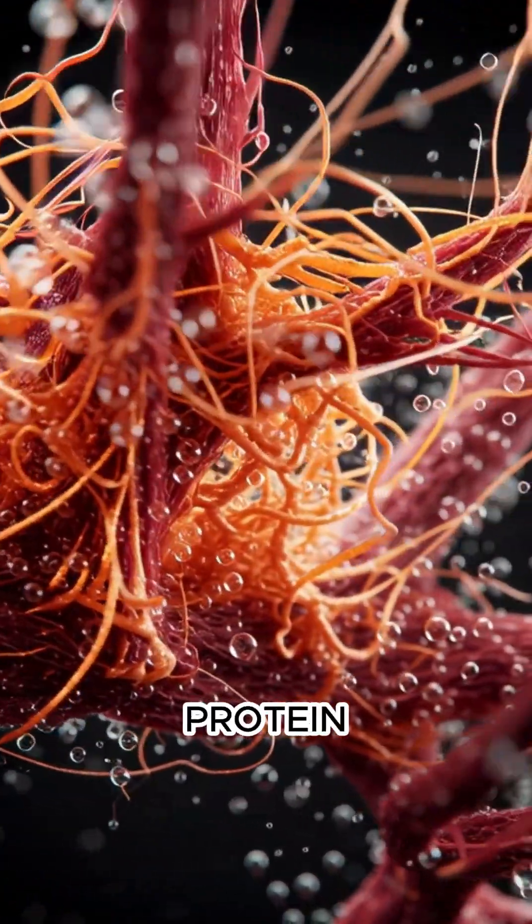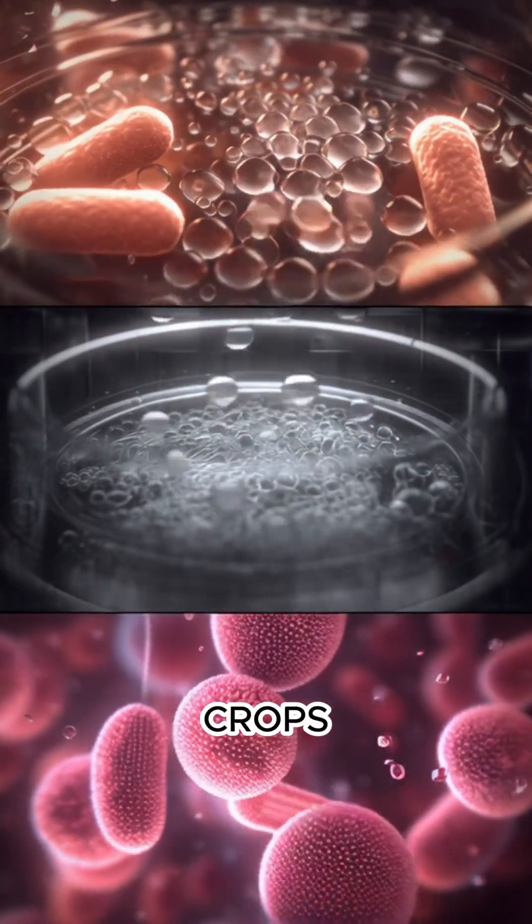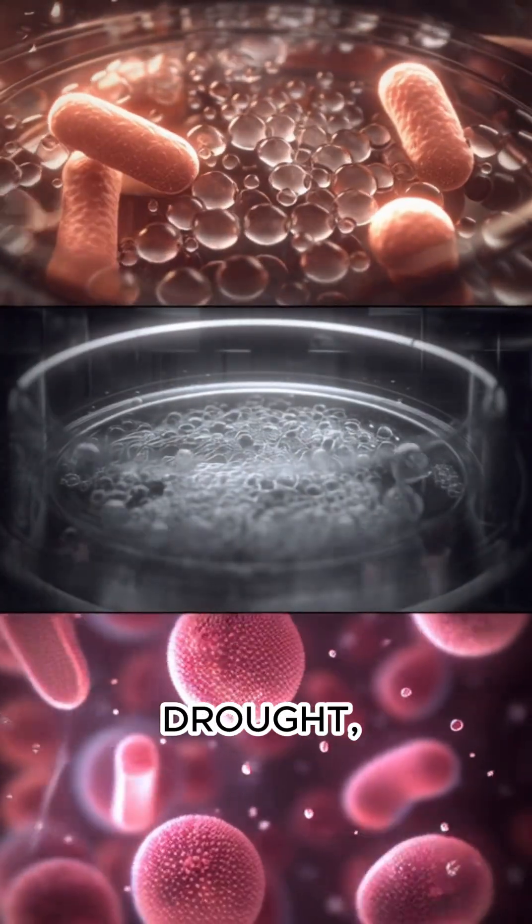Microbes already make protein. Meat grows without animals. Crops are edited to survive drought, heat, and disease.